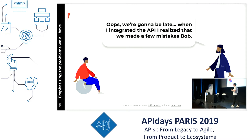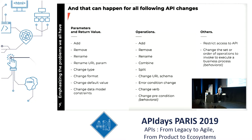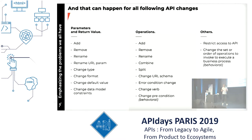They continue working, and that's the moment to integrate back-end with front-end — and then oops, we're going to be late. 'When I integrated the API I realized that we made a few mistakes, so we have to rewrite the code again and again because we changed parameters and added operations. We made mistakes of course — we are humans.' This is a very short example that I live quite often when I work on a project with a front-end team and a back-end team.